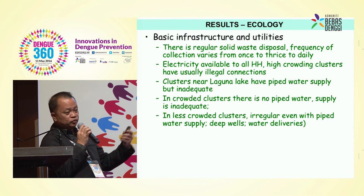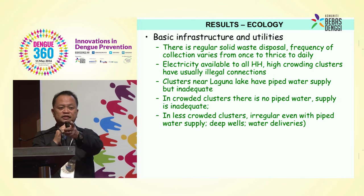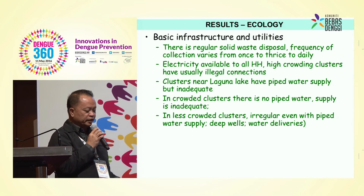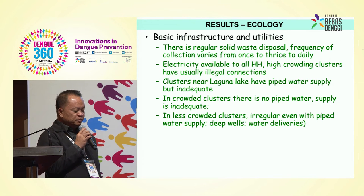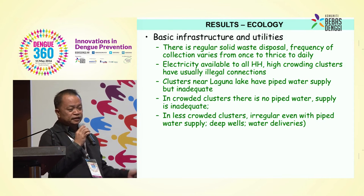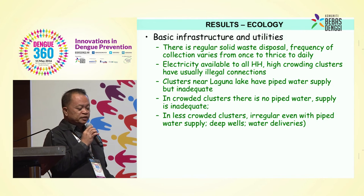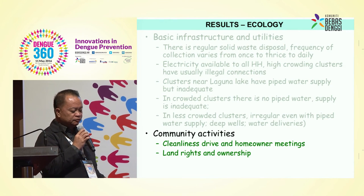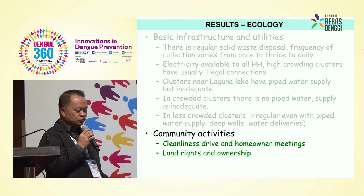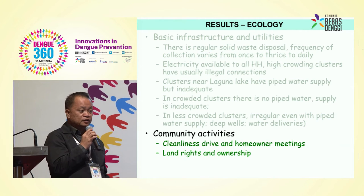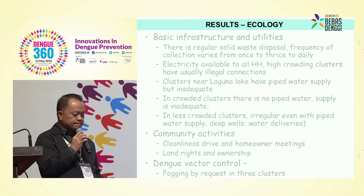Clusters near Laguna Lake — on the southern side of Muntinlupa City — have no piped water supply or inadequate water supply. In less crowded clusters, irregular or piped water supply and deep wells are common for water delivery. In short, in these communities the number one problem is the source of water. Community activities related to dengue control include cleanliness drives, homeowners meetings, land rights and ownership issues because most residents are informal settlers, and fogging by request.